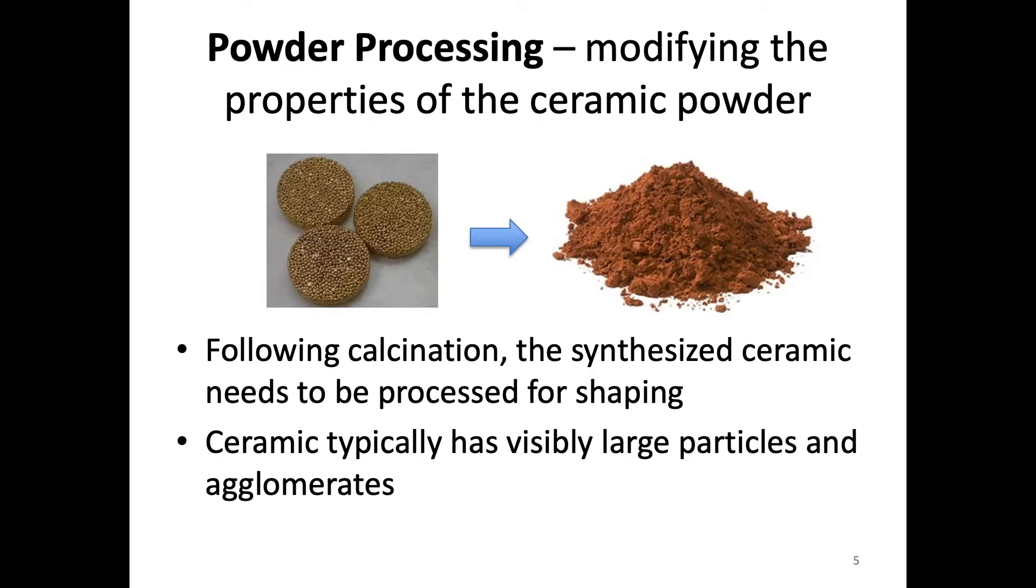All right. So what we mean by powder processing is really quite simple. We just mean that we're trying to modify the properties of the ceramic powder. And so I put this little schematic up here basically just showing an illustration of this. So when we first synthesize or we receive a powder, we don't necessarily know the state that it's in. So it could be that there's lots of large particles or agglomerates, which are just clusters of particles stuck together. And so we want to sort of process it into a free flowing powder that has the properties that we need for shaping.